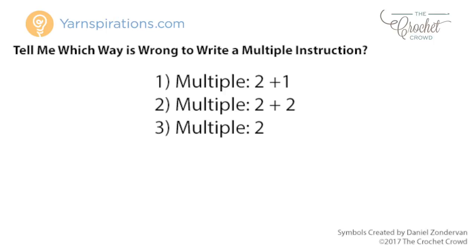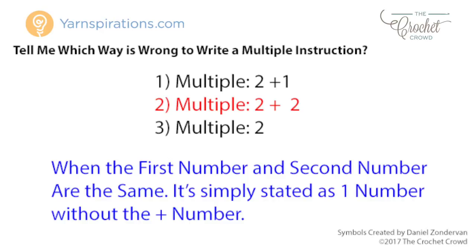So which one is incorrect? Number 1 is correct — the stitch counts are in twos and one is added at the end to keep the chain in balance. Number 2 is also technically correct — the stitch counts are multiples of two and you just add two at the end. And number 3 is also correct — stitch counts are just multiples of two. So if they're all correct, which one is actually wrong? If you guessed number 2 — number 2 is technically correct but written wrong. There is no difference between number 2 and number 3 because it's the same thing.